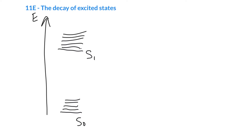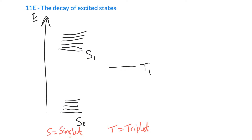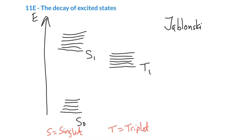The S stands for singlet, representing singlet states. Off to the side, there are also what we call triplet states, using T. The first excited triplet state is T1, and it is normally below the energy of the first excited singlet state S1 — an important distinction. These triplet states also have vibrational levels. These kinds of diagrams are typically referred to as Jablonski diagrams.